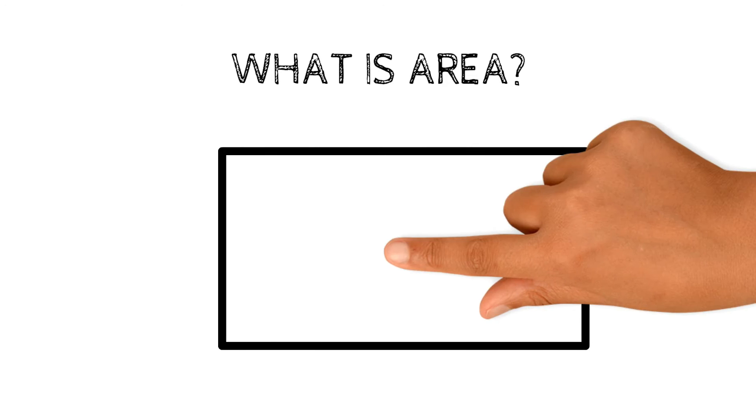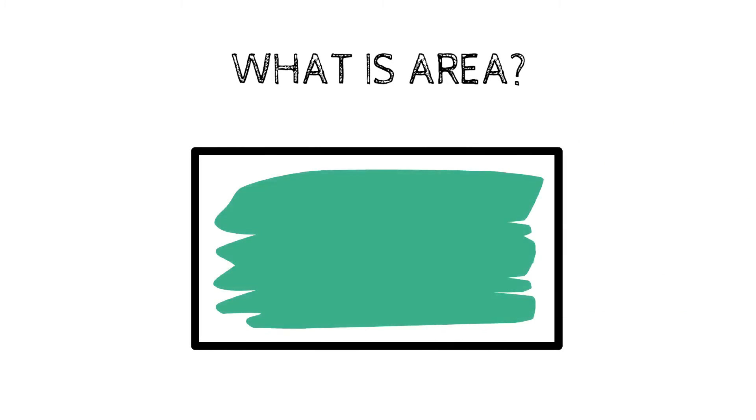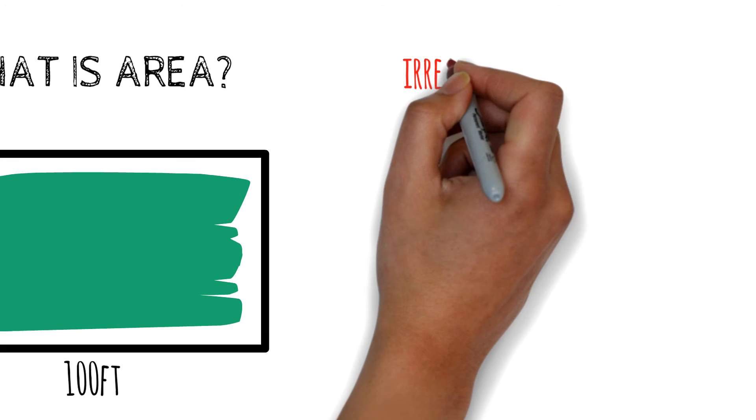What is area? This is the space occupied within the shape of your plot. Most plots are usually rectangular in shape, which is why terms like 50 by 100 feet are commonly used. However, some plots take on irregular shapes.